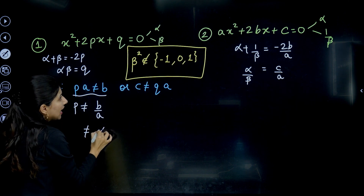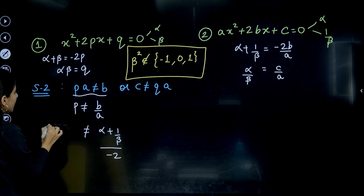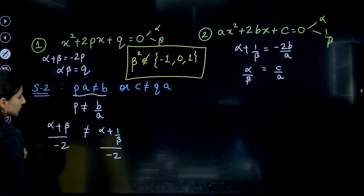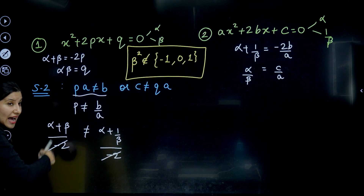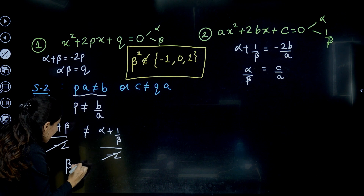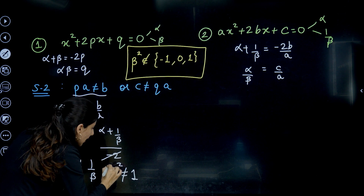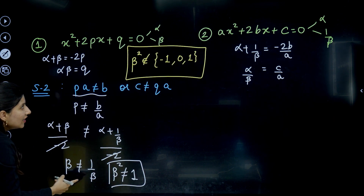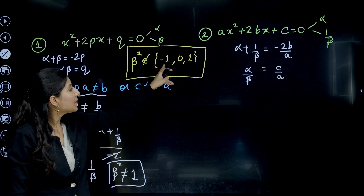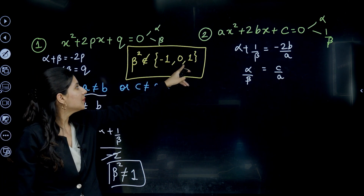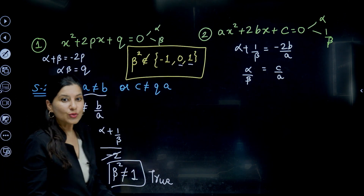P = (alpha + beta)/(−2) and B/A = (alpha + 1/beta)/(−2). The −2 cancels on both sides, and alpha cancels too, leaving beta ≠ 1/beta, which means beta² ≠ 1 and beta ≠ 0. This is already given — beta² cannot be 1 or 0 — so this part of Statement 2 is true.